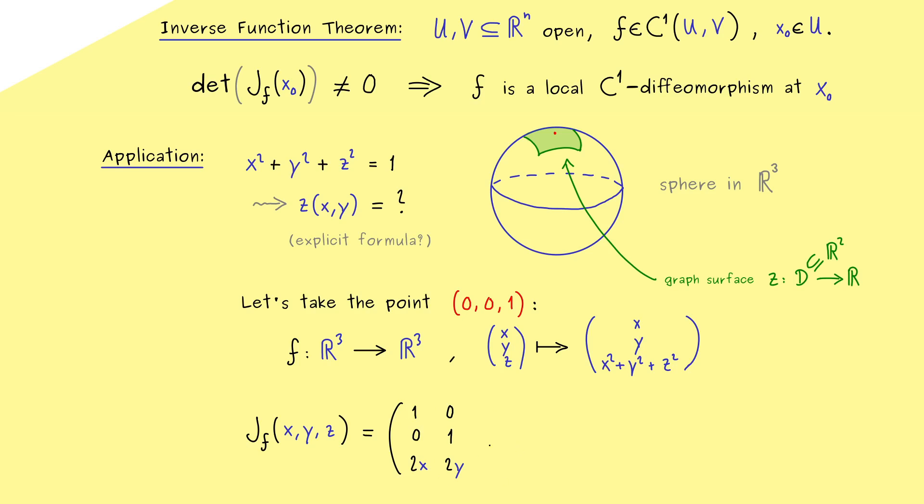And finally for the last column, we need to calculate the partial derivative with respect to z. And there we have it. This is our 3×3 matrix. And then you immediately see, at our point (0, 0, 1), we have the determinant is 2. Hence, our assumption from the inverse function theorem is satisfied.